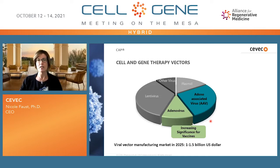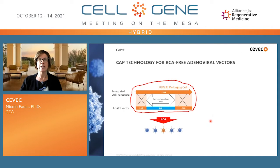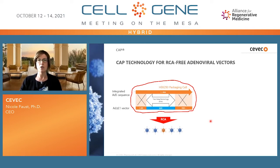The production methods for these vectors have been well-established over many years. They are mainly based on HEK293 cells — human embryonic kidney cells — and this method yields very good vector productivities and good quality, but they have an inherent risk. The inherent risk is that when the HEK293 cells were produced, a big piece of AD5 genomic DNA was used to immortalize these cells.